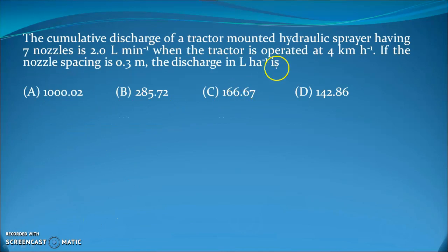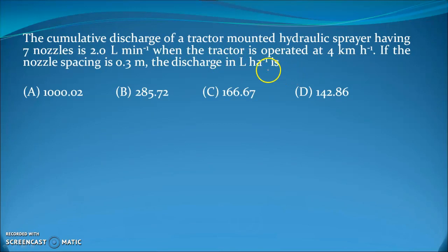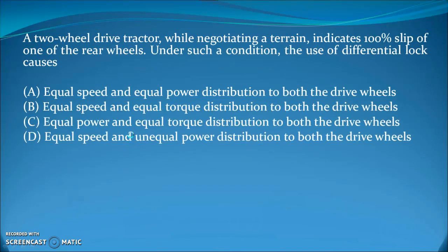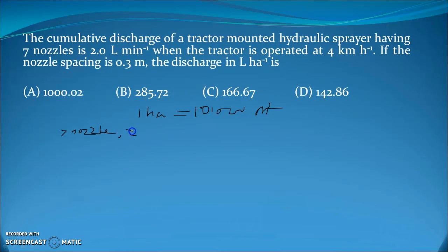Next question: the cumulative discharge of a tractor-mounted hydraulic sprayer having 7 nozzles is 2 liters per minute when the tractor is operated at 4 km/h. If the nozzle spacing is 0.3 m, the discharge in liters per hectare will be how much? One hectare is 10,000 m². With 7 nozzles at 0.3 m spacing, the effective swath width is 7 × 0.3 = 2.1 m.